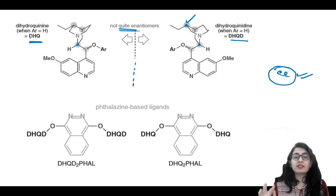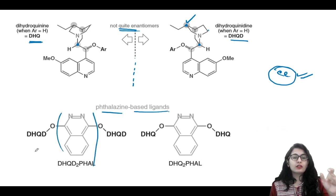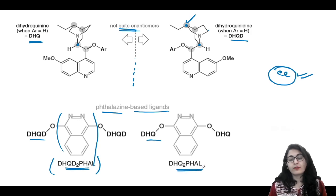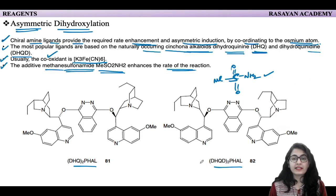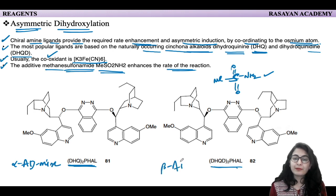These are two different amines which, when combined with a phthalazine-based ligand, give you these two complexes: (DHQD)₂-PHAL and (DHQ)₂-PHAL. You don't have to remember the structure, only the name: DHQ-PHAL and DHQD-PHAL. We're going to remember them as alpha-AD-mix and beta-AD-mix. AD stands for asymmetric dihydroxylation mix.